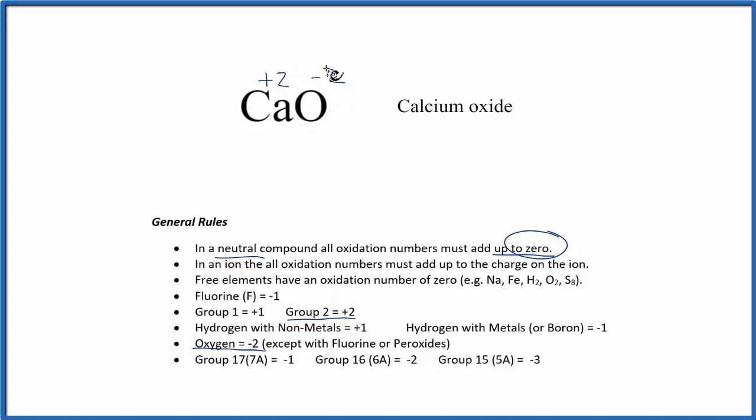If we look at these two numbers, plus two and minus two, they add up to zero. It's a neutral compound. So that makes sense.